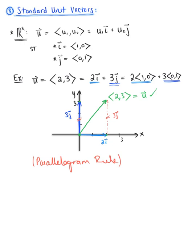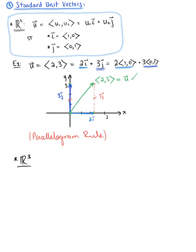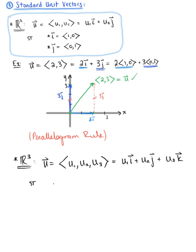This holds true not only in 2 dimensions but also in 3 dimensions. In R3, the component form of a vector is (u₁, u₂, u₃), and the standard unit vector form is u₁ times î plus u₂ times ĵ plus u₃ times k̂, where î, ĵ, and k̂ are the unit vectors in the x, y, and z directions respectively. So î equals (1, 0, 0), ĵ equals (0, 1, 0), and k̂ equals (0, 0, 1).